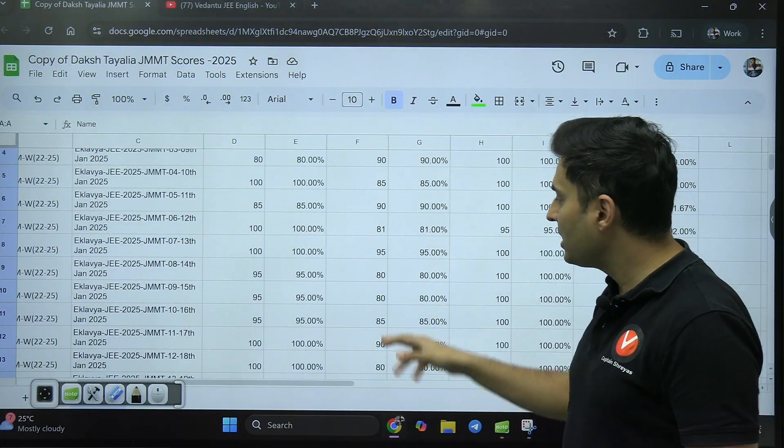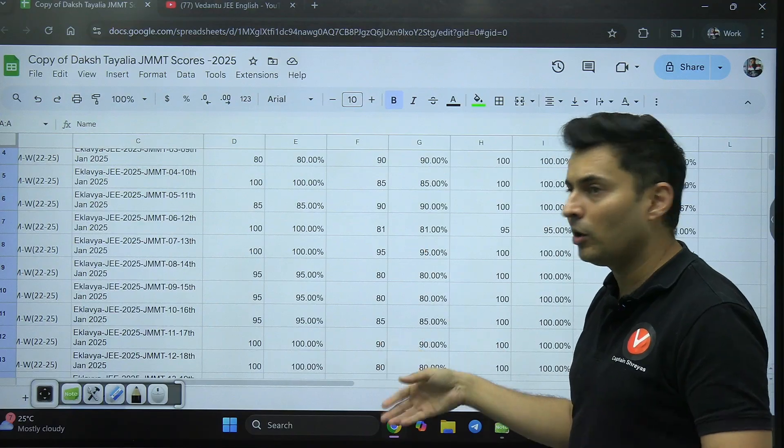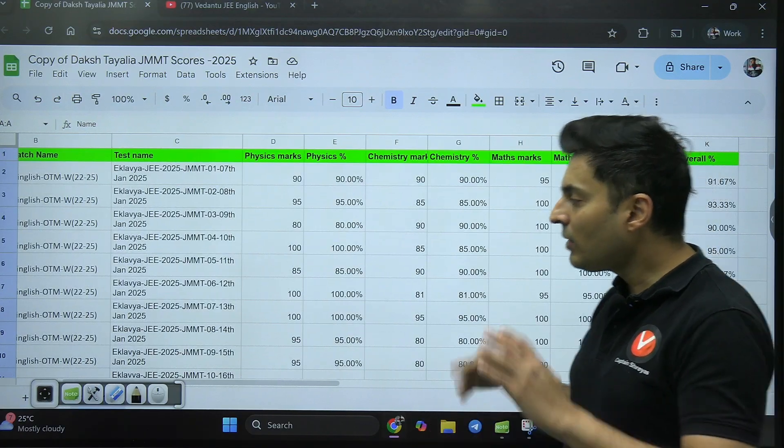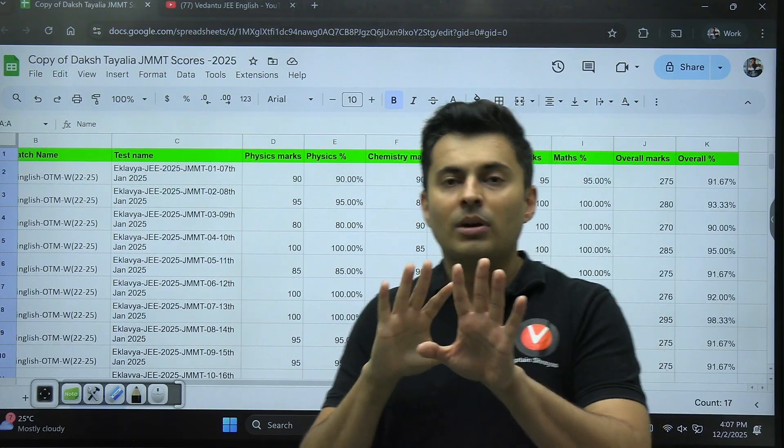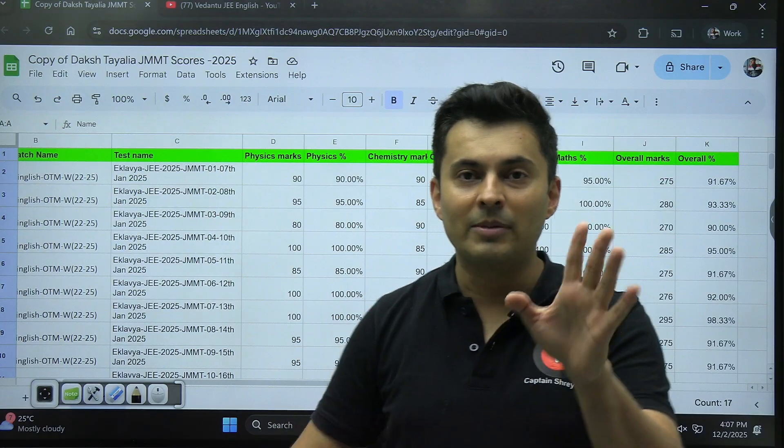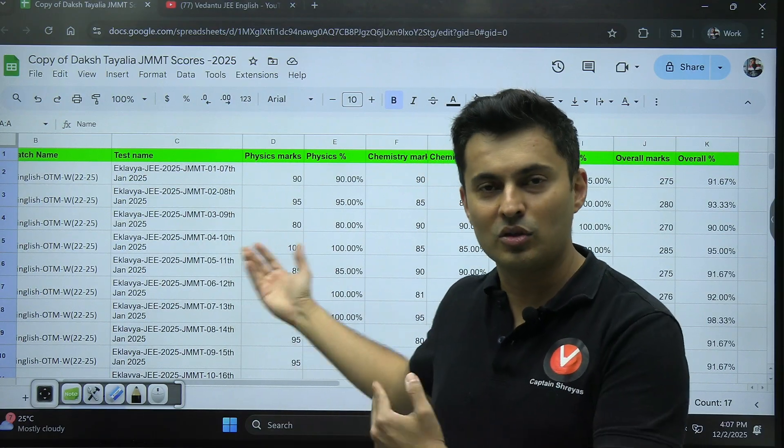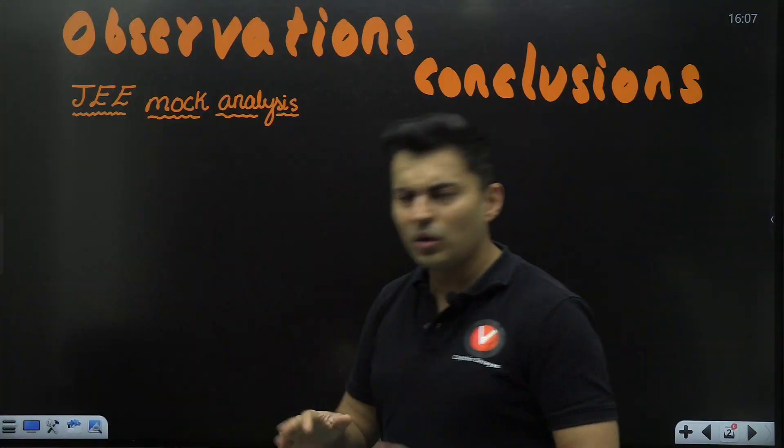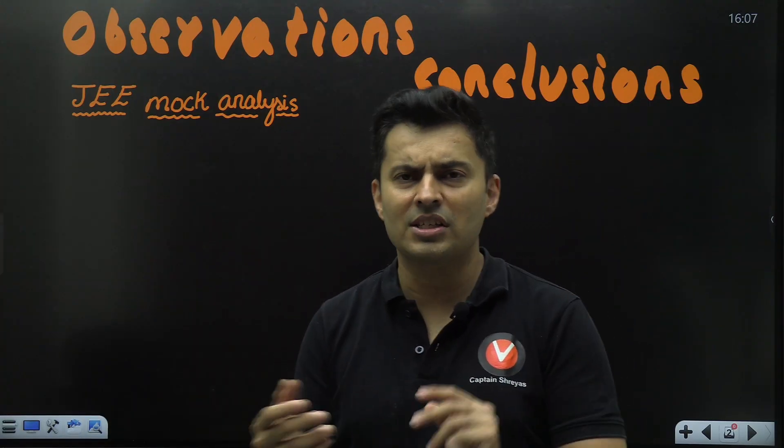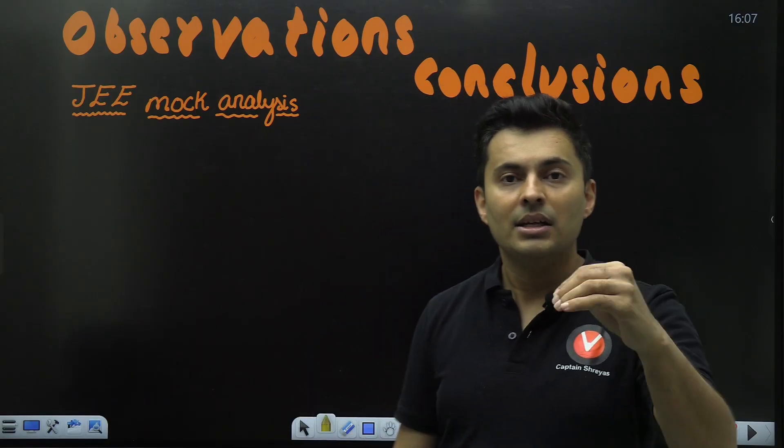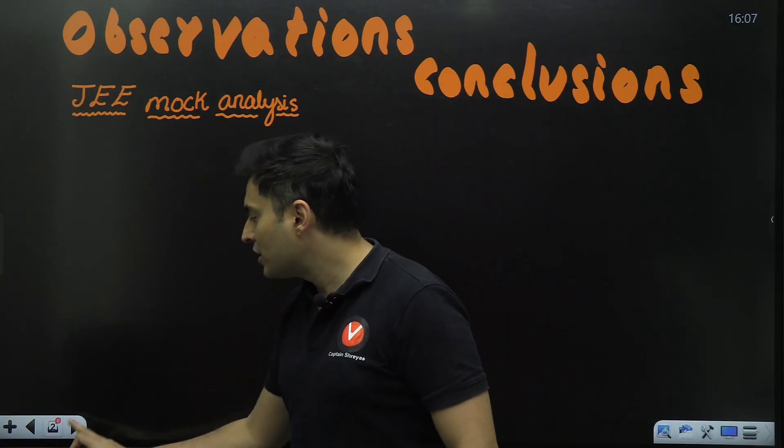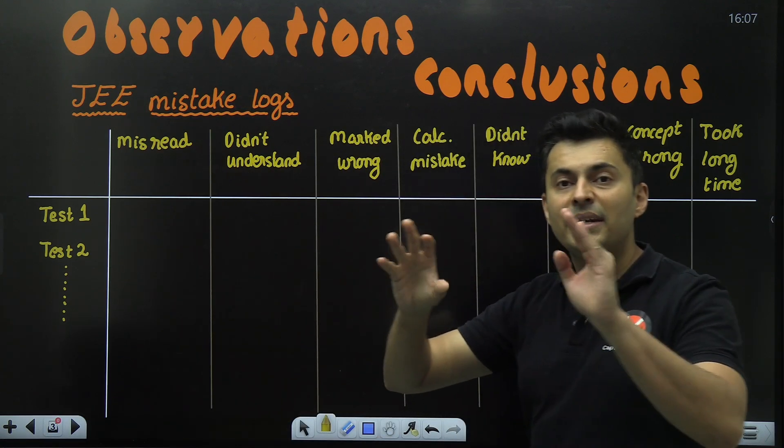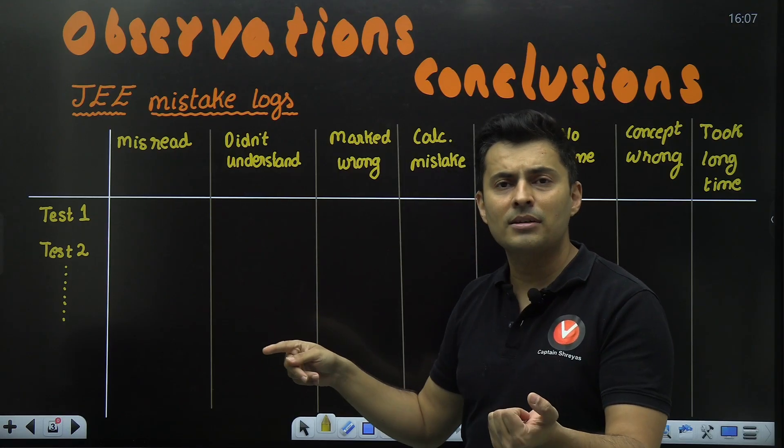It was clear in Daksh's head that Maths is my strength—I have to give my 100%. Physics is also a strength but might lose a couple of marks in negative, some concepts here and there. In Chemistry there were times where Daksh did not know the topic and also made a lot of mistakes.